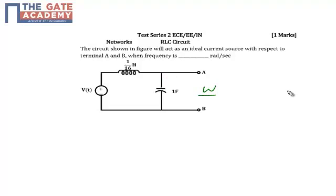For which the circuit will behave like an ideal current source. For an ideal current source with infinite input impedance, it's a parallel LC network, so for infinite input impedance my admittance should be equal to zero.